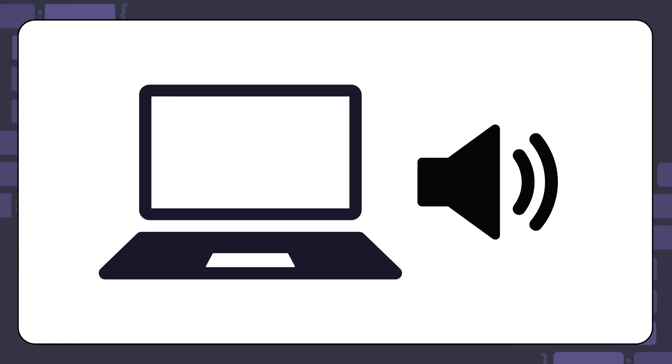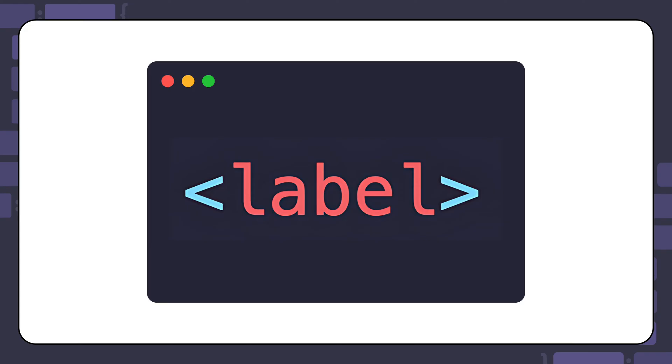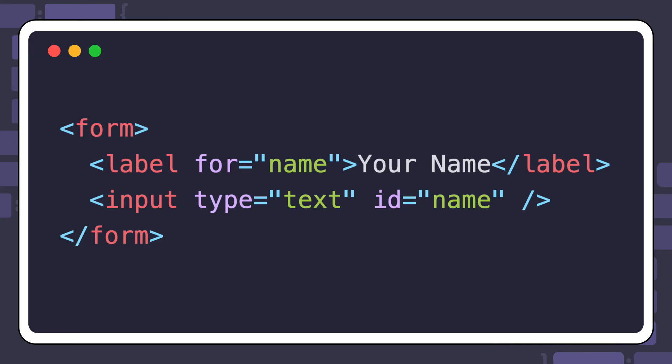Screen readers often rely on labels to describe the purpose of input fields. In order for this to work properly, the label must be programmatically associated with the input. While there are several ways to do that, the most common one is to use the HTML label element. In this example, the for attribute of the label element is associated with the ID of the input element. This connection allows screen readers to announce the label when the input is in a focused state, allowing screen reader users to understand the purpose of the input.